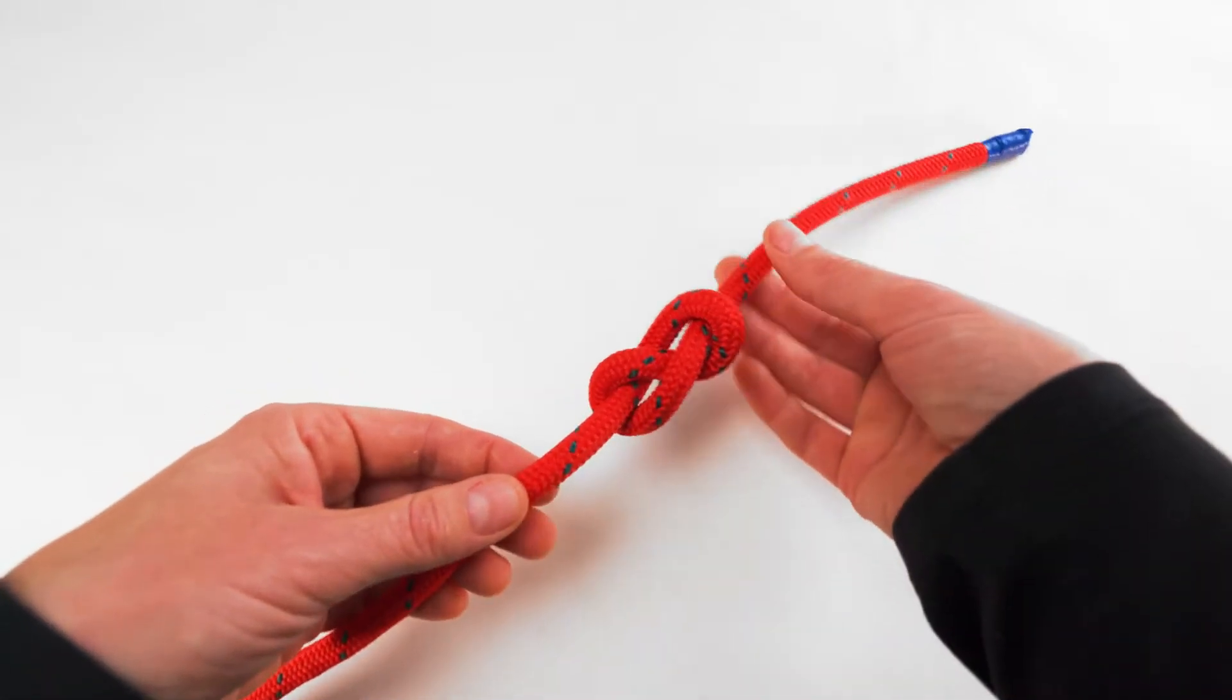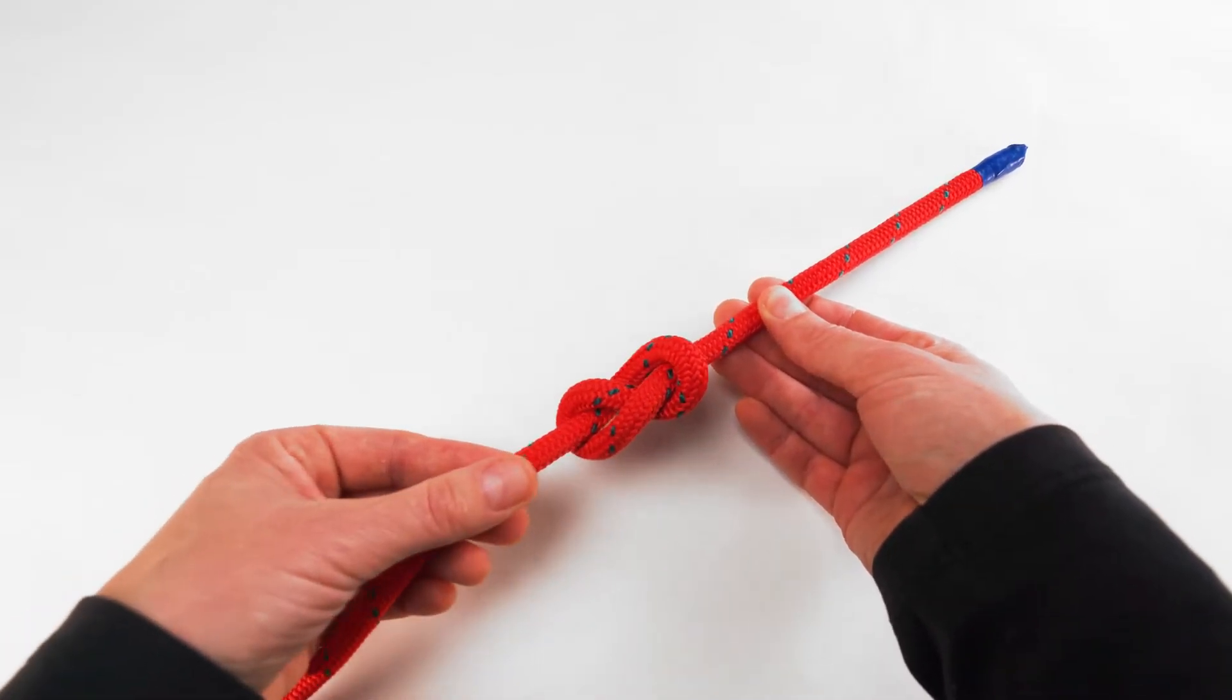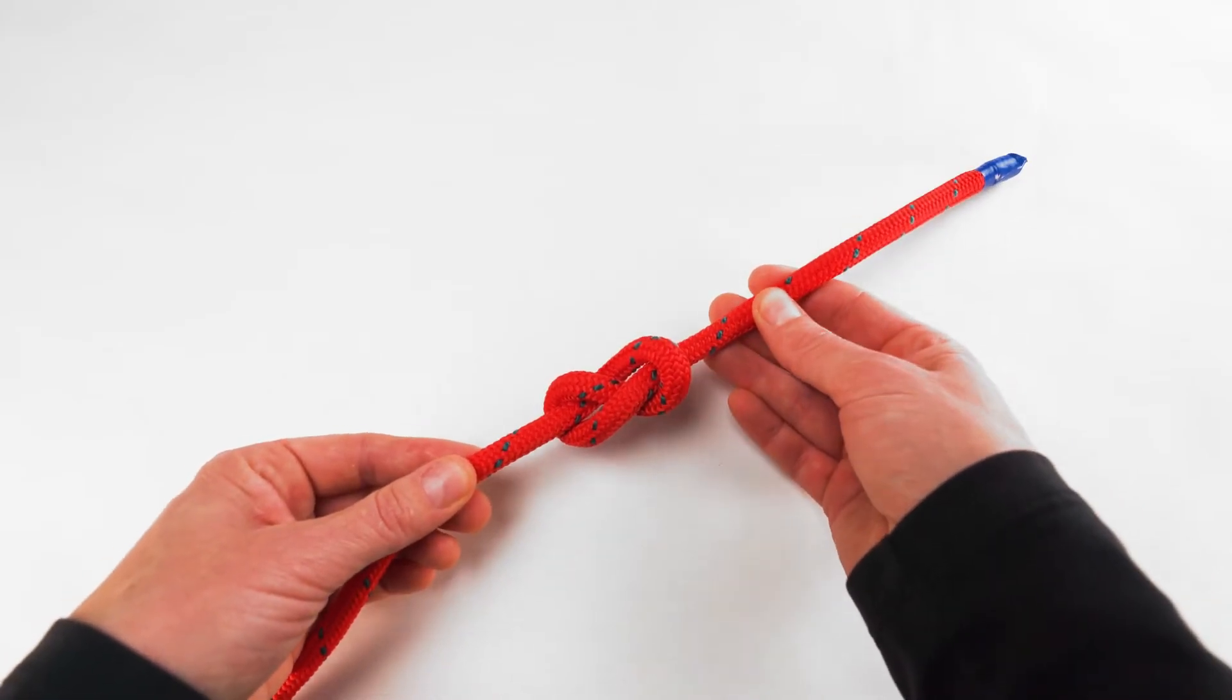The figure eight is similar to an overhand knot but with one extra turn. The figure eight shape is easily recognizable. This is commonly used as a stopper knot on the end of a rope.